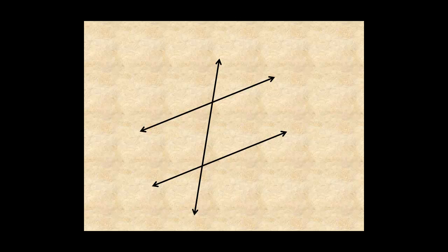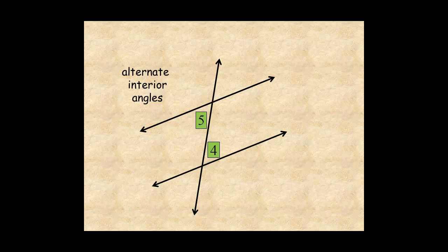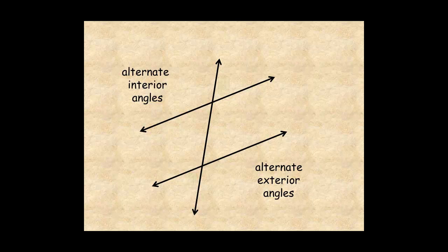So angles 3 and 6 are alternate interior angles, as are 4 and 5. Angles 1 and 8 are alternate exterior angles, as are angles 2 and 7.